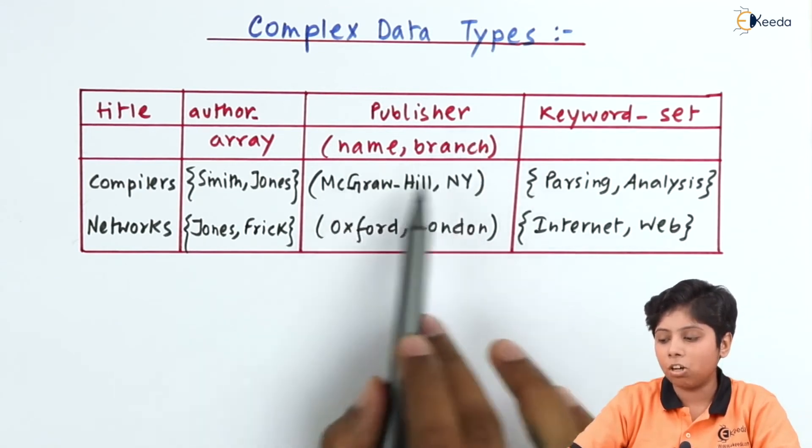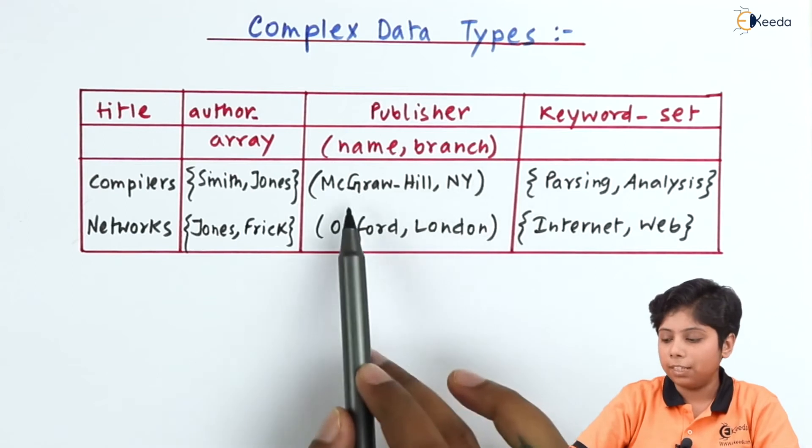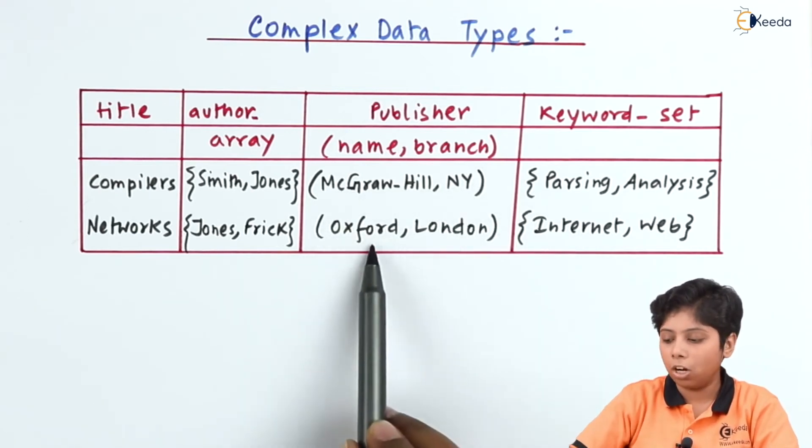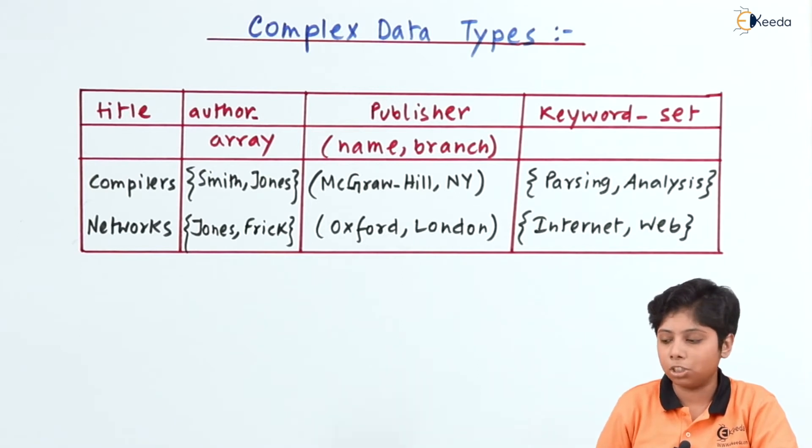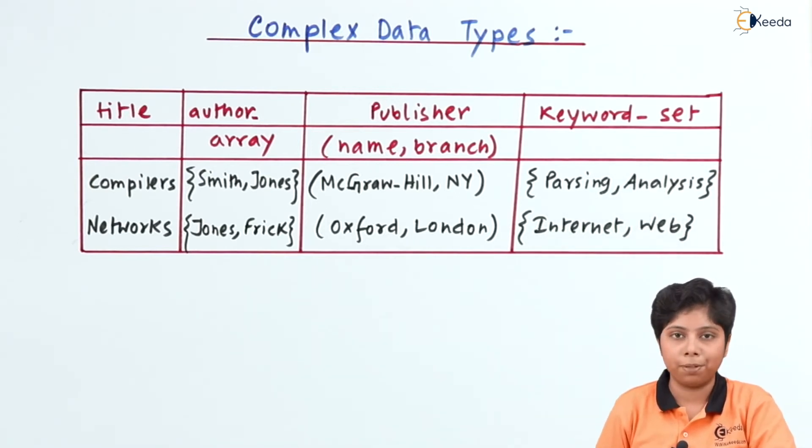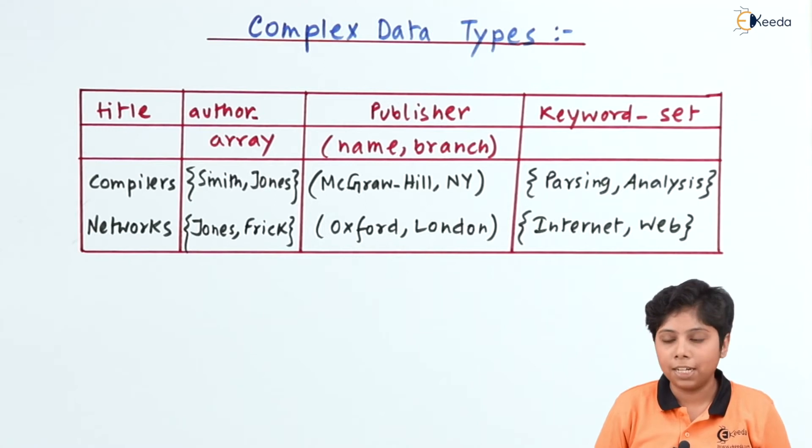Now the publisher is a combination of two fields: name and branch. The name is the McGraw-Hill publisher of NY branch and Oxford publisher from London branch. And the keyword set is parsing, analysis, and internet, web. So here we have used an array, here we have used a combination or a set, and a multi-valued attribute.